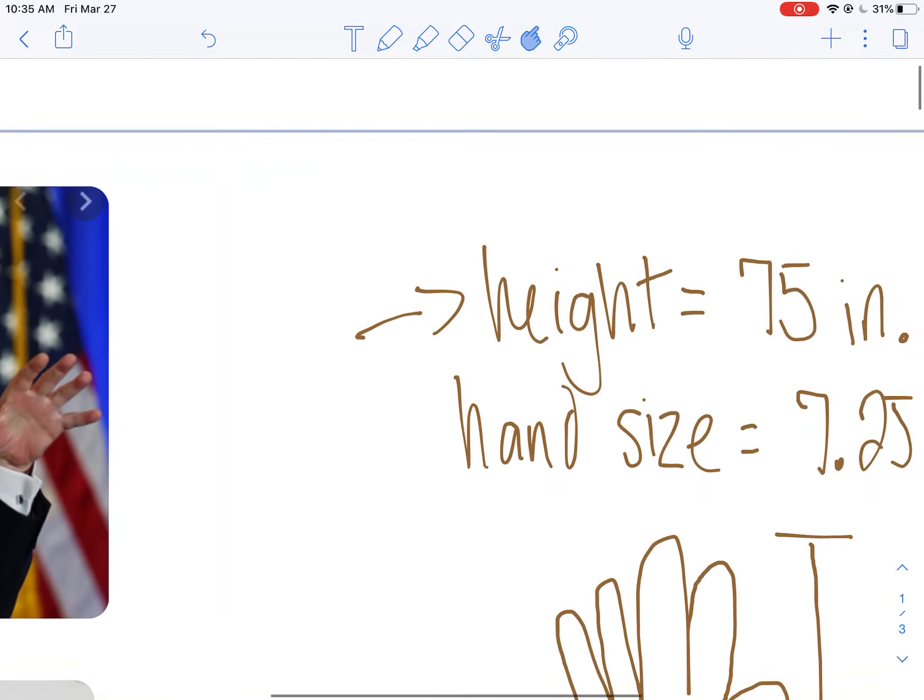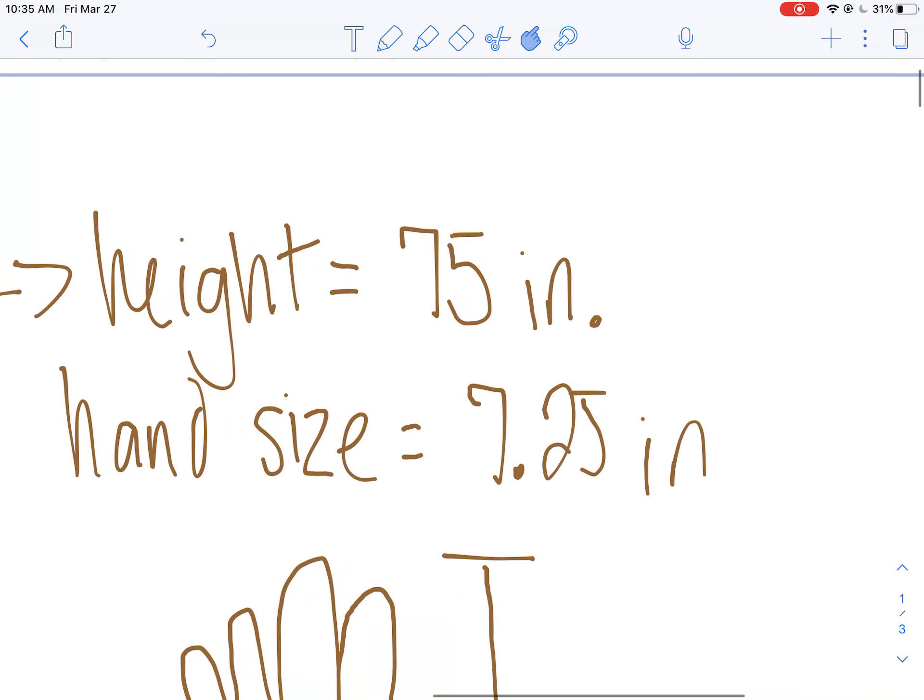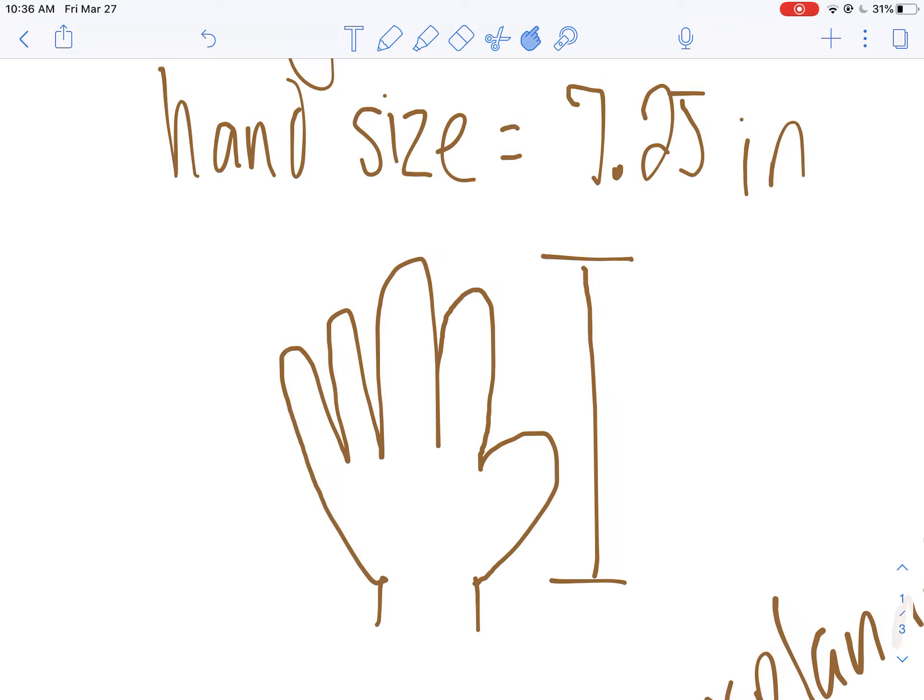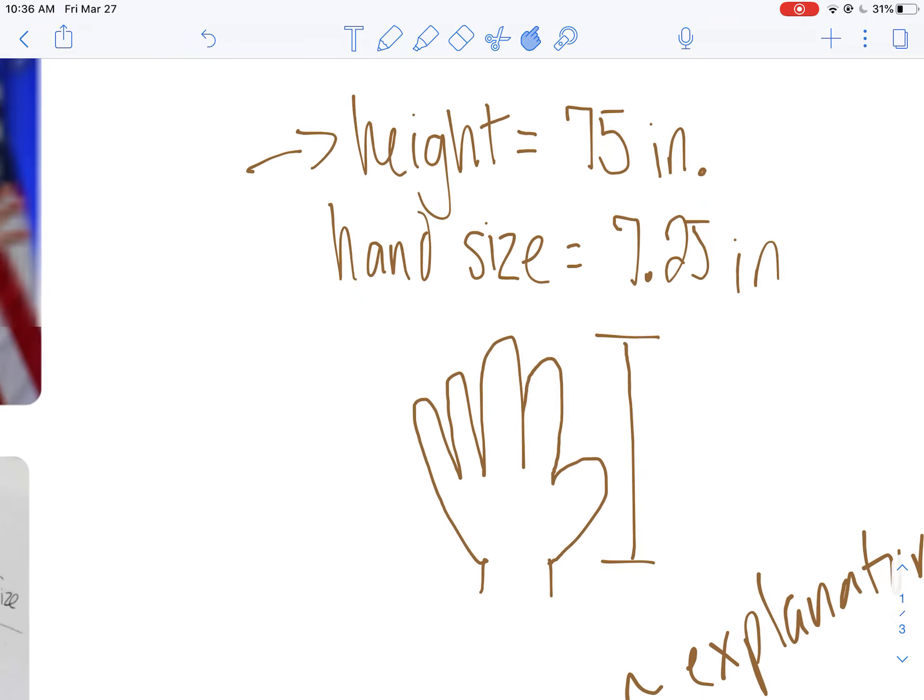So how do we do this? Well, first of all, I got some information. He is 6'3", so he's 75 inches tall, and his hand size is 7.25 inches. How did I get this? If you Google it, you will find that in Trump Towers they have an imprint of his hand in the lobby and someone actually measured it. There are multiple sources confirming this, that his hand size is 7.25 inches when you measure from the top of his wrist to the top of his middle finger.